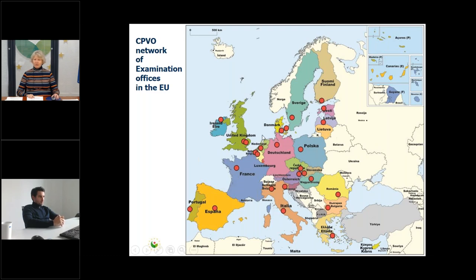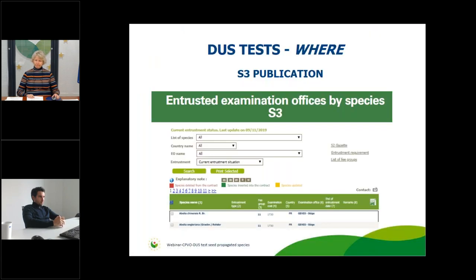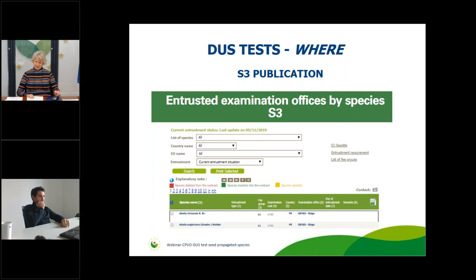The CPVO network of examination offices in the EU means the CPVO itself has not set up its own examination offices — it relies on the network of already existing offices in member states. For example, in France we work with Gévese, in the Netherlands with Naktuinbouw, in Italy with CREA, in Denmark with Tystofte. On the CPVO website you will find the S3 Special Gazette — the gazette on entrustment of examination offices by species — where you can search by species and find the fee group, number of growing cycles, country, and authority name.